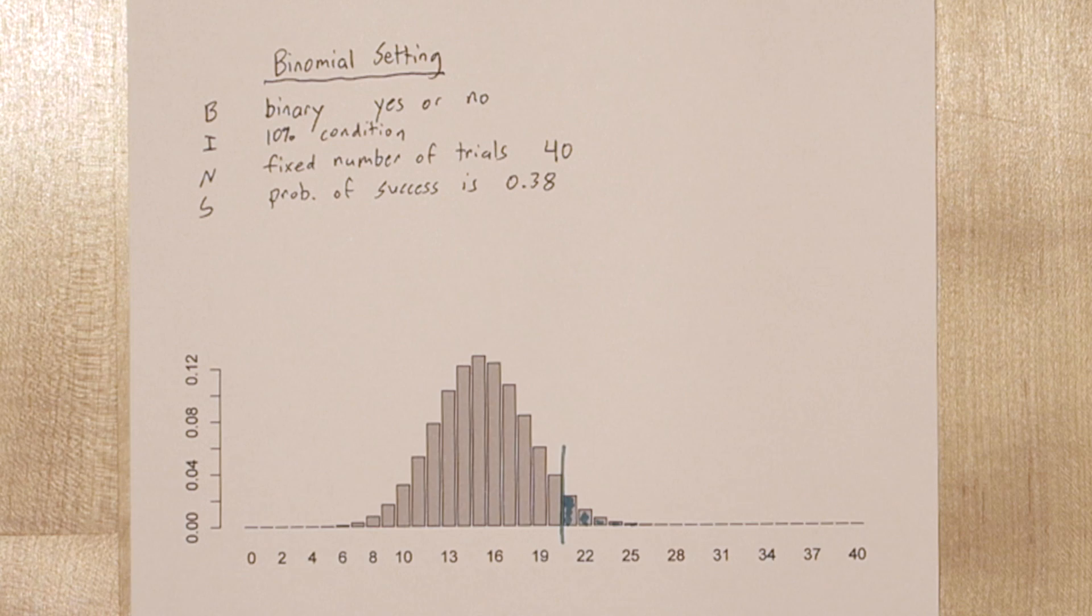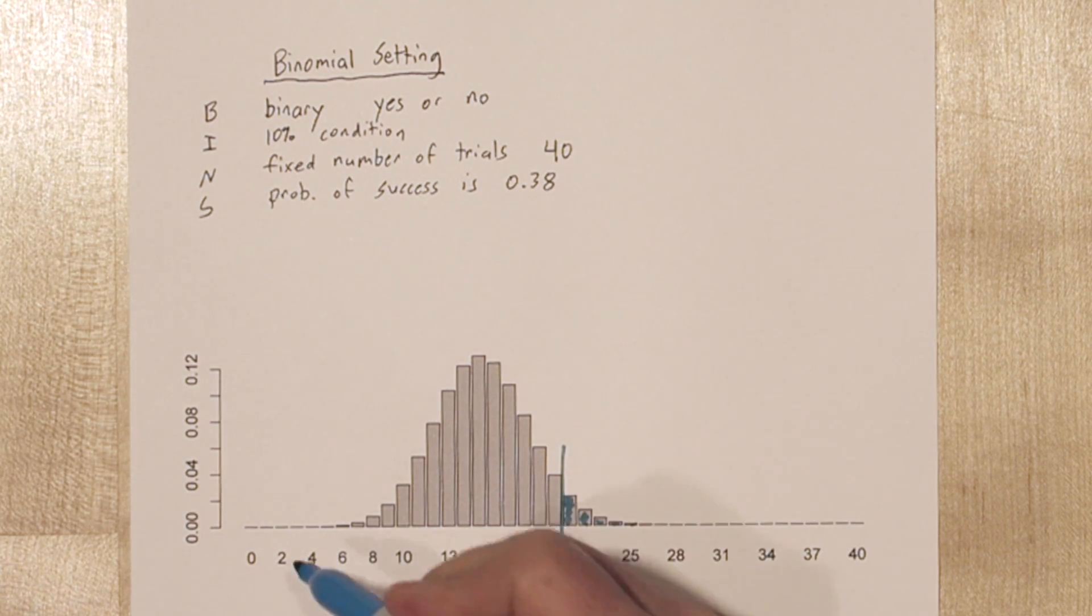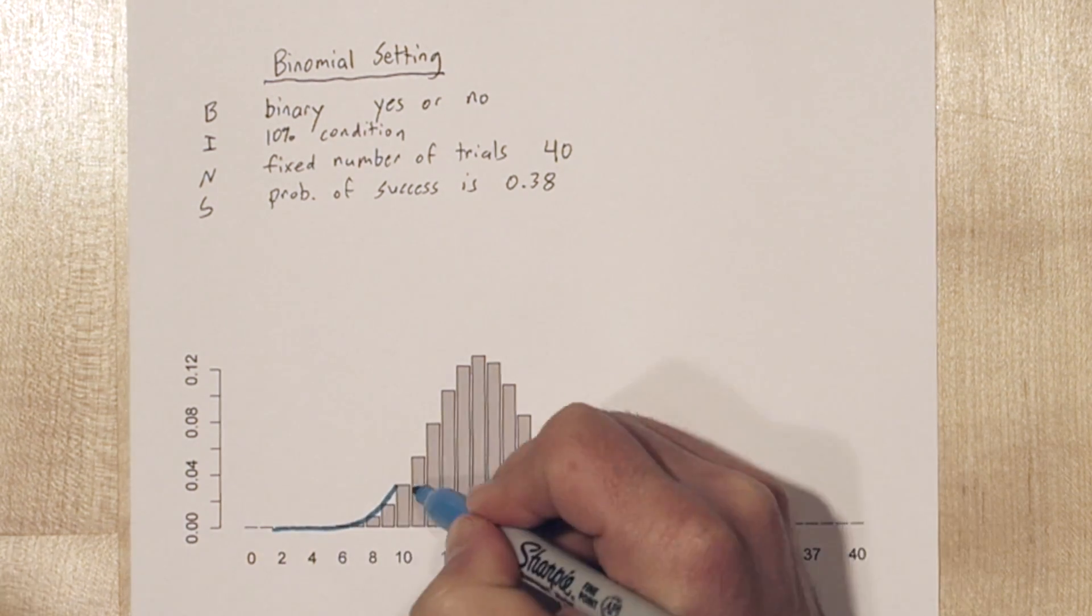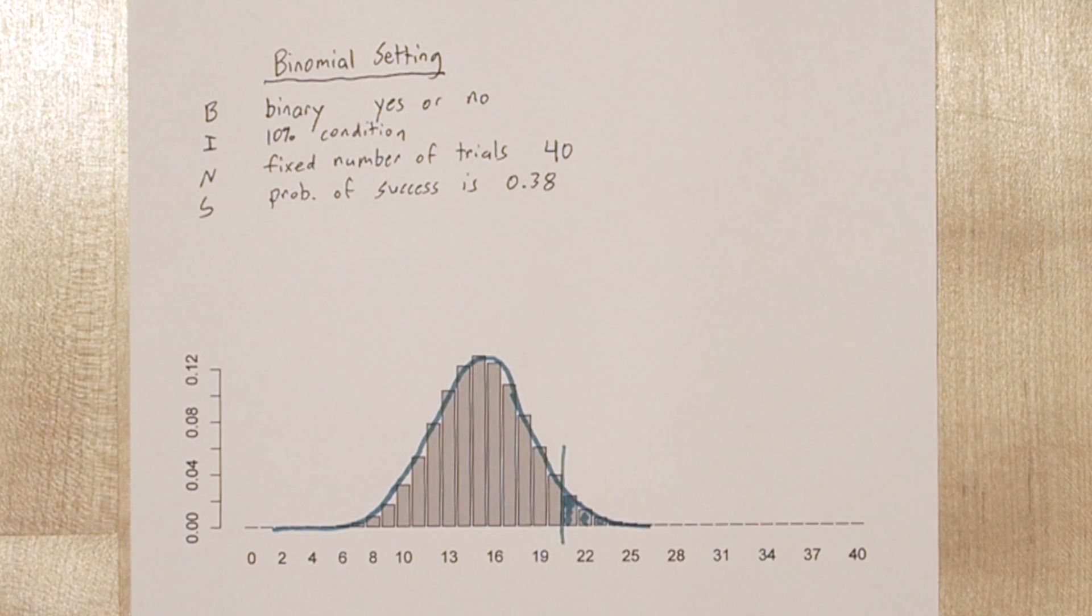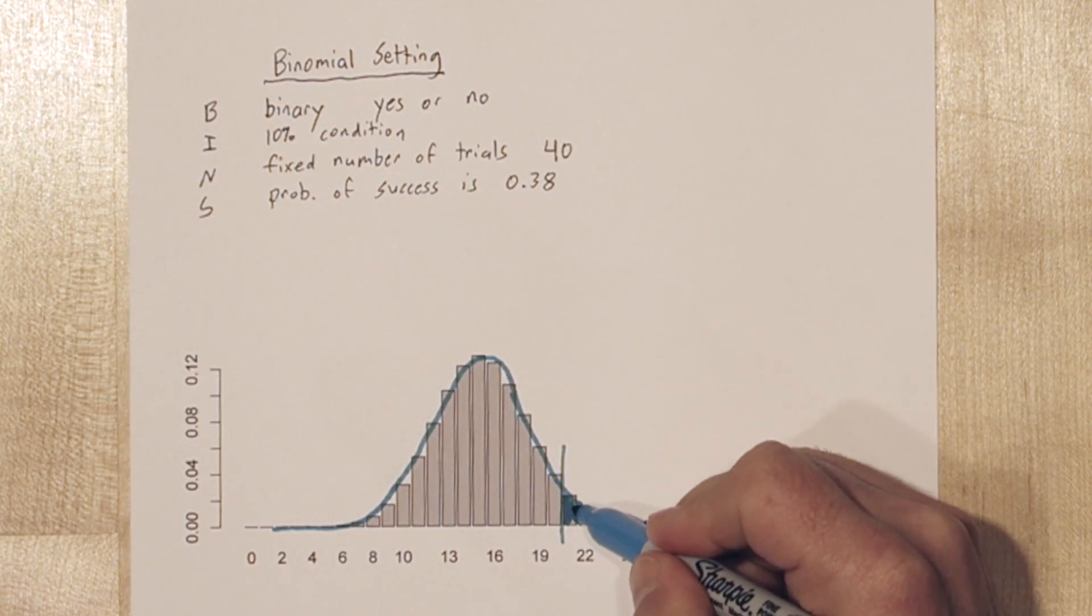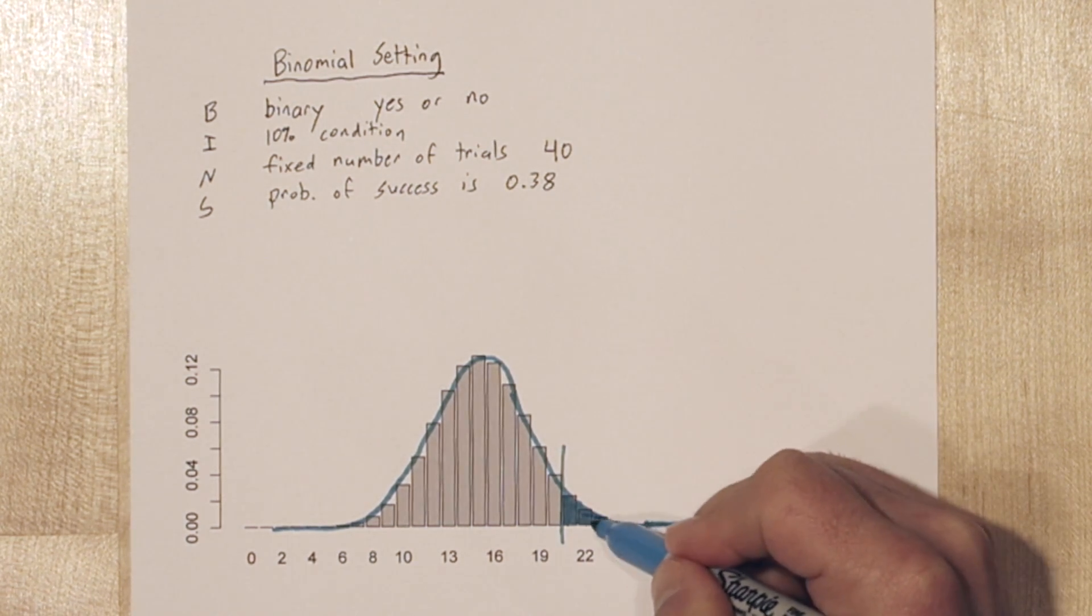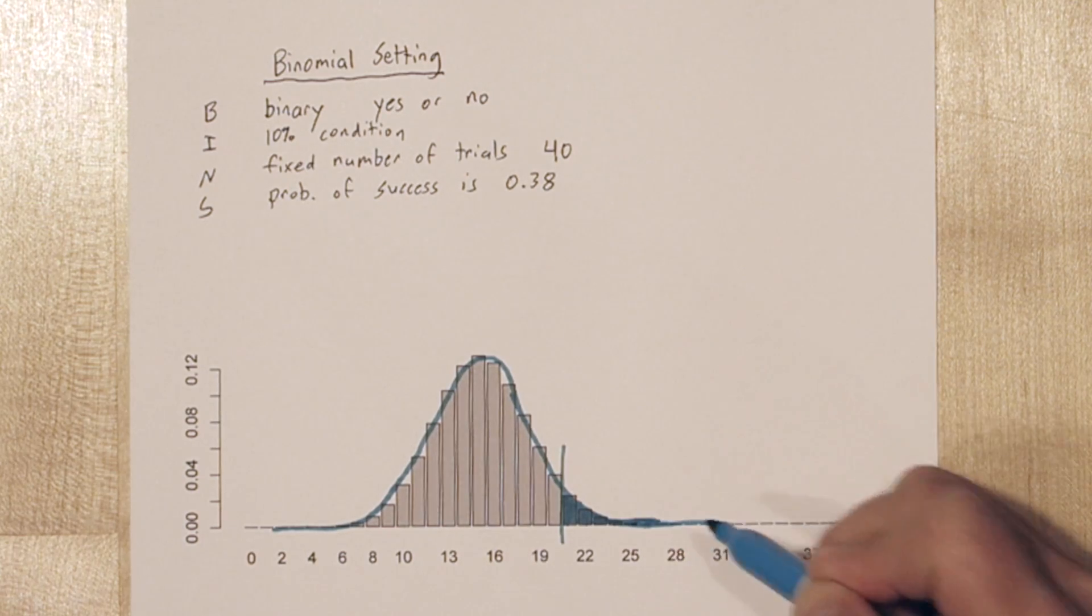When we use the normal approximation, we used a curve that looks like this. Now this curve fits pretty well, but it's slightly different than the actual distribution. Our normal curve gave us all of this area, which the discrete binomial distribution below it doesn't match perfectly.